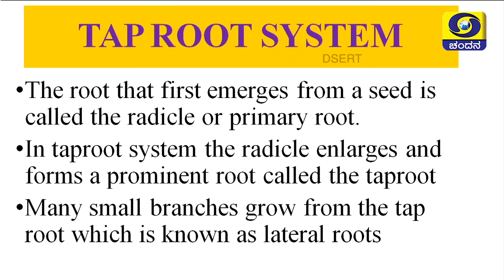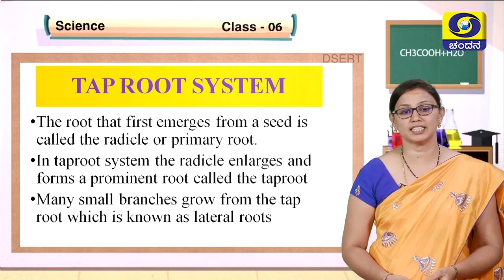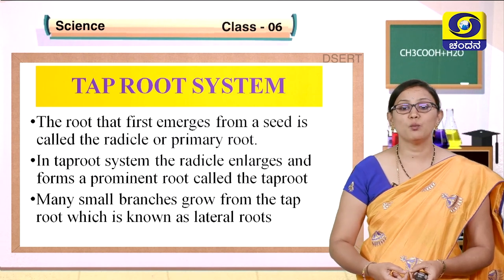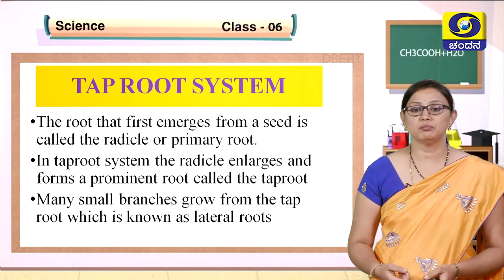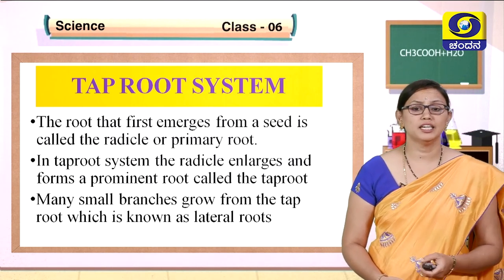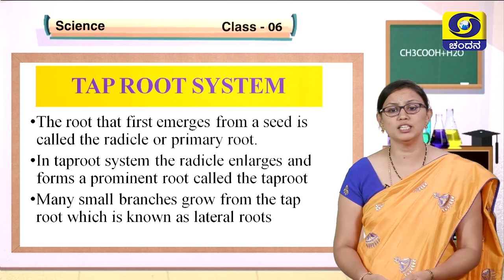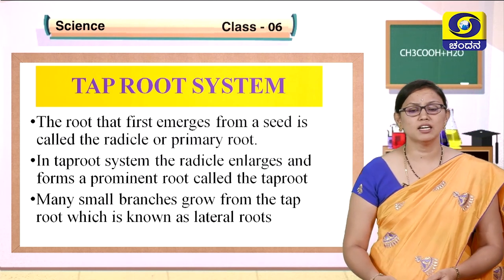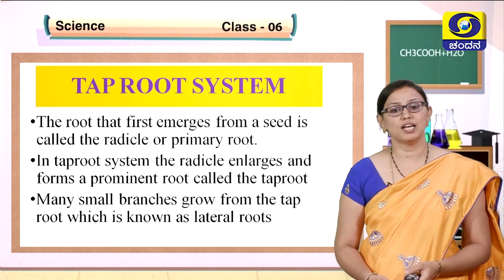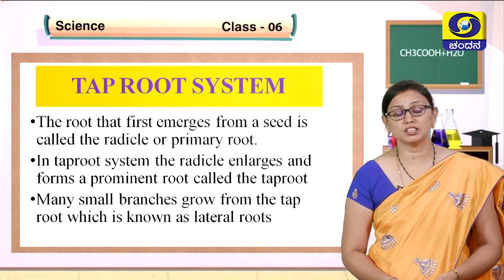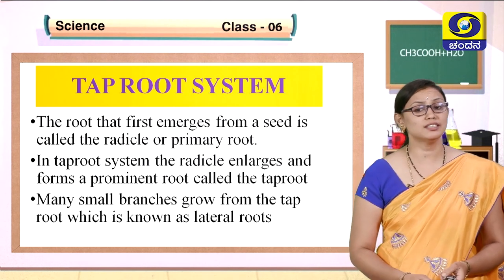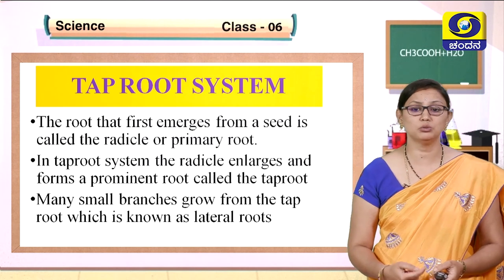What is the tap root system? The root that first emerges from a seed is called the radicle, or primary root. In the tap root system, the radicle enlarges and forms a prominent root called the tap root. From the primary root, a prominent tap root is formed, and many small branches grow from the tap root which are called lateral roots.